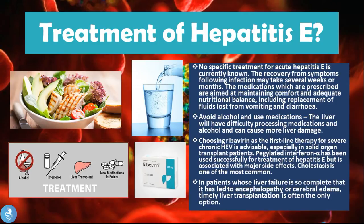No specific treatment for acute hepatitis E is currently known. Recovery from symptoms following infection may take several weeks or months, and medications prescribed are aimed at maintaining comfort and adequate nutritional balance, including replacement of fluids lost from vomiting and diarrhea. The patient is advised to avoid alcohol and certain medications, because the liver has difficulty processing them and they can cause further liver damage.